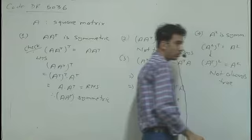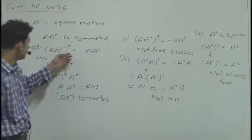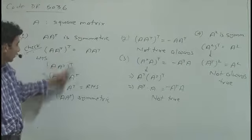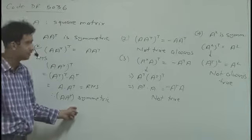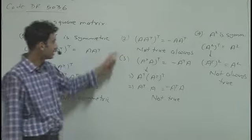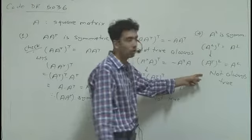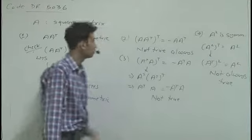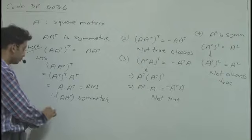So out of four options, we can see clearly that only the first option holds always. The second, third, and fourth options are not always true. Therefore, the correct choice is option A.